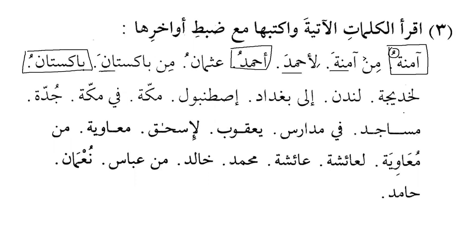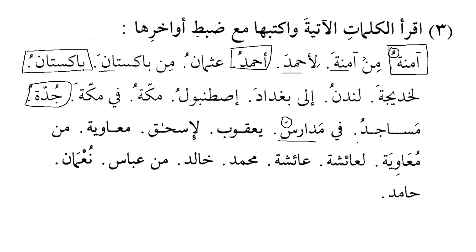Ila Baghdad-a. Istanbul-u. Makkah - when you say Ana fi Makkata, it will be fi Makkata. Jeddah-tu is the default construction - Jeddatu. Masajidu - because it is also Mamnoo min as-Sarf on the pattern of Mafa'ilu, it will be Masajidu. Fi Madarisu - Madarisu is on the pattern of Mafa'ilu, so it is also Mamnoo min as-Sarf. Masajidu and Madarisu are on the same pattern Mafa'ilu and are Mamnoo min as-Sarf.